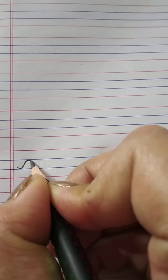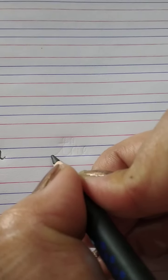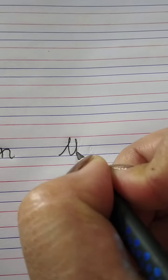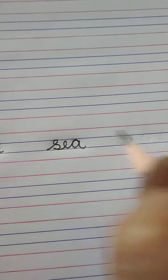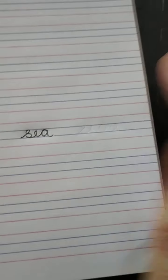Write O, N. On. Give space. The. On the. Then S, E, A. Sea. One finger space.